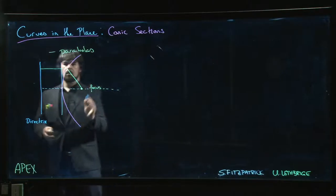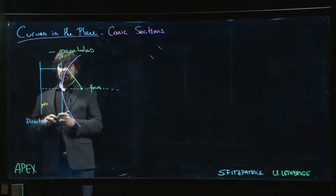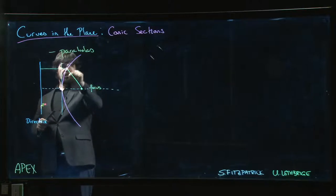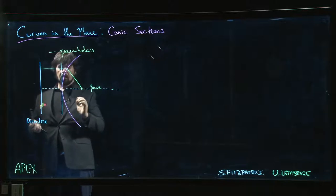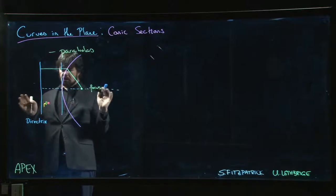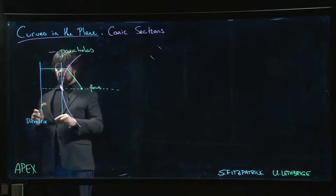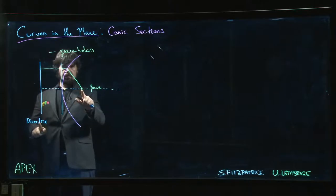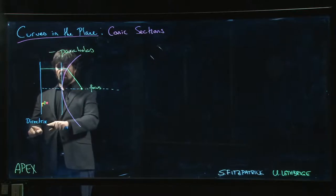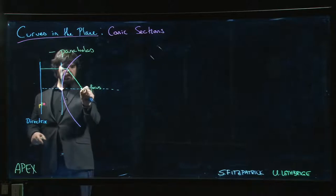So the setup for the parabola is this. We have the parabola here in red. This is our curve. And the condition on the parabola is that there are two pieces of the construction. There is this line called the directrix and a point called the focus.